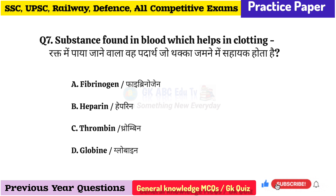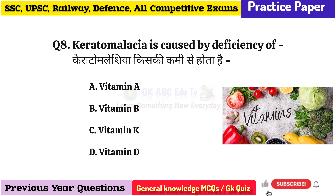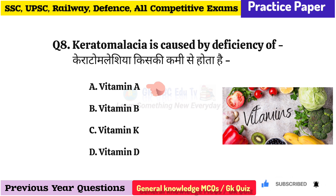Answer: Pancreas. Question: What substance found in blood helps in clotting? Answer: Fibrinogen. Question: Keratomalacia is caused by deficiency of? Answer: Vitamin A.